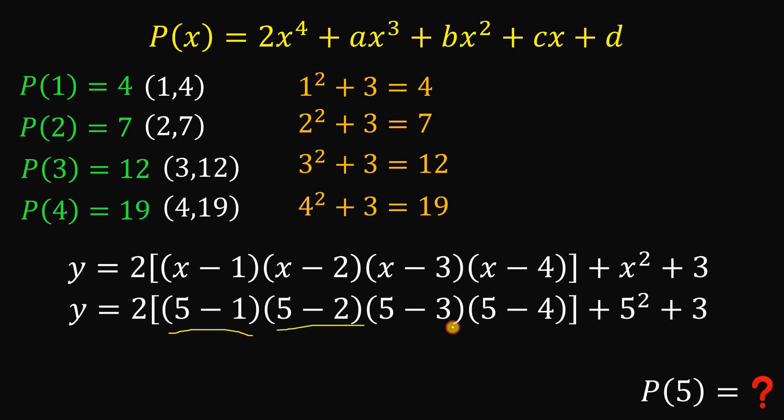This is 4, this is 3, this is 2, this is 1, or simply equal to 4 factorial. So 2 times 4 factorial or simply equal to 24. 5 squared is 25, bring down 3. 2 times 24 is 48. 25 plus 3, this is 28. And 48 plus 28 simply equal to 76. This is y, and this is also the value of P of 5. And this is our answer to this question.